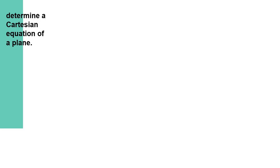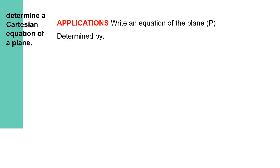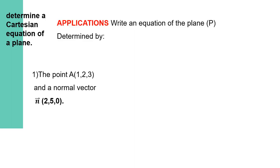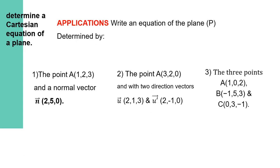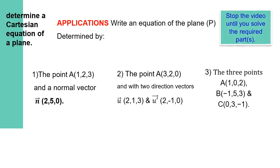We have three non-collinear points A, B, and C. Cartesian equation of a plane — we have to solve the following applications: write an equation of the plane P determined by a point A and a normal vector N; by a point A and two direction vectors U and U′; and by three points A, B, and C. Stop the video until you solve the required parts, then check your answers. Please recall the three rules covered before.